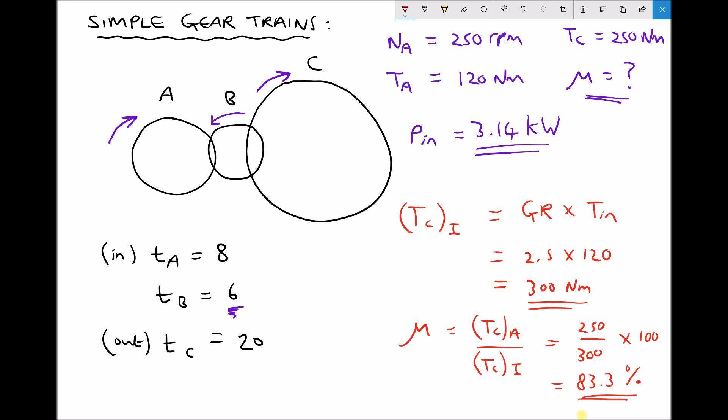Now when we use the previous method we got 83.4, but the difference there is as a result of rounding our power values for the power in and the power output in the previous method.